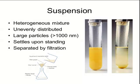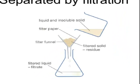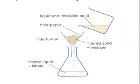The best way to separate a suspension is by filtration. You can take that test tube and pour it into a filter funnel filled with filter paper. The filter paper will collect the filtered solid or residue, while the clear liquid will continue through the funnel and collect in the flask below. The liquid collected in the flask is called the filtrate.